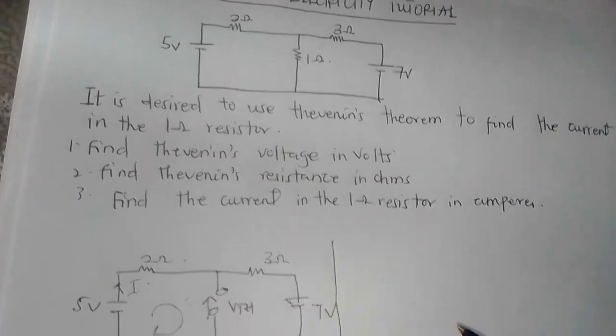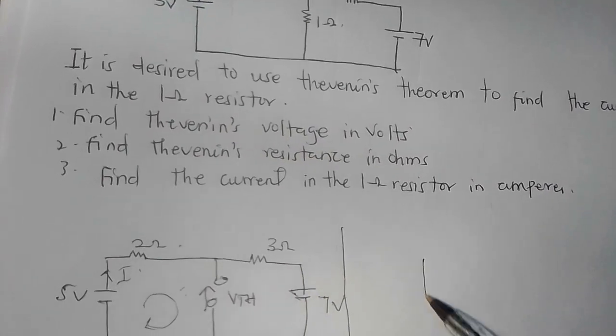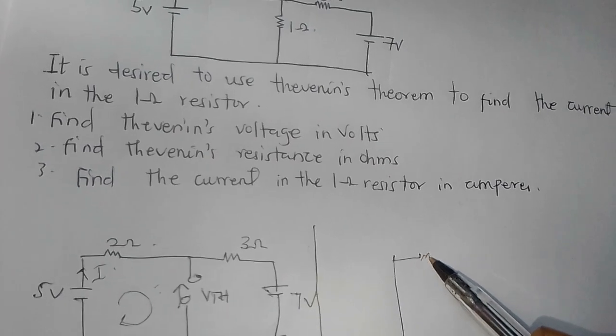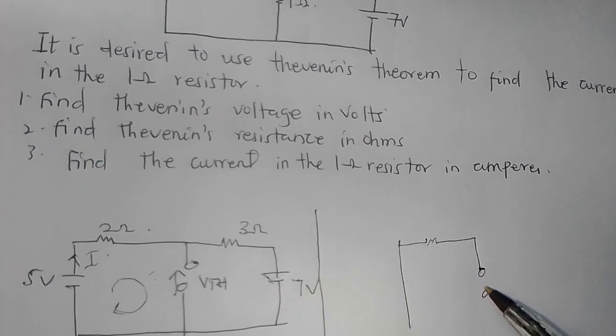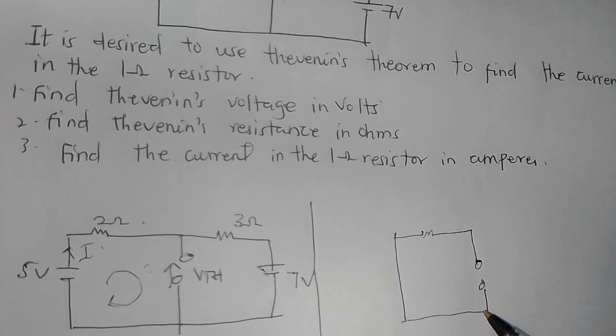Since we have a voltage source, let's short-circuit that part, then we're going to put RTH at the part we had the VTH. So we redraw the circuit.